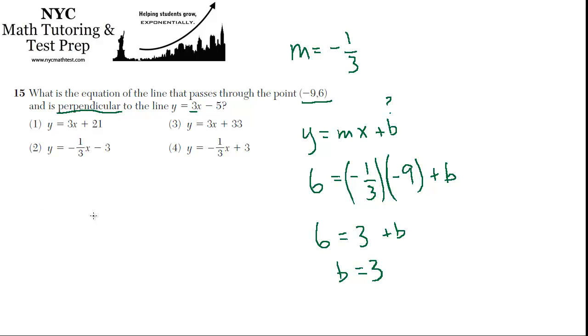So, the final answer is, so now that we found b, we plug that back into y equals mx plus b. We know the slope, and we know the y-intercept. So, y equals negative 1 third x plus 3. And that corresponds to choice 4.